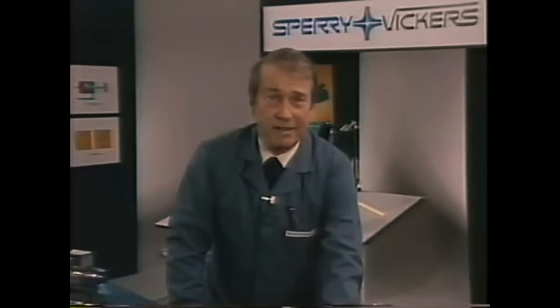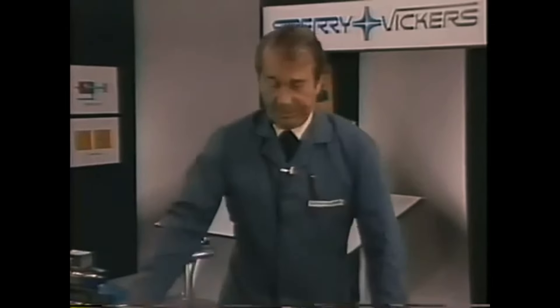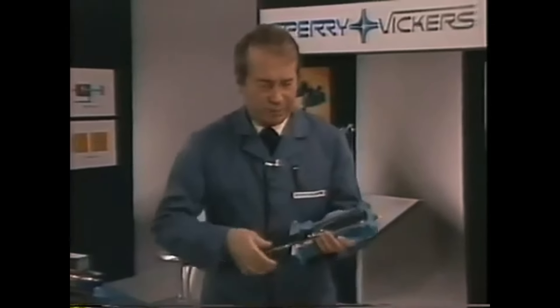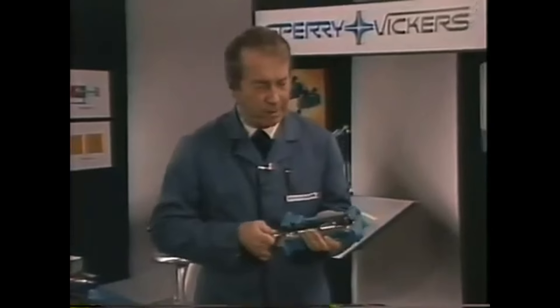Basically, there are two motions we can achieve hydraulically. We can move something in a straight line, or we can make something rotate. A cylinder, or linear actuator, provides the straight line motion. It can be single-acting, like a hydraulic jack, where the weight of the car brings it back down, or double-acting, where the piston is forced both forward and backward in its bore, by fluid under pressure.